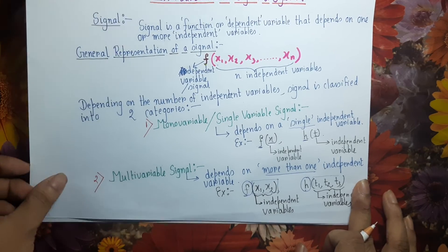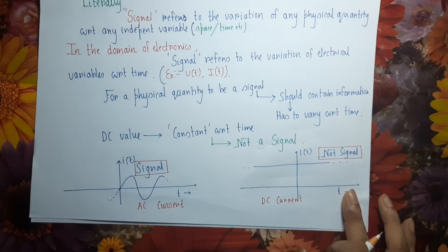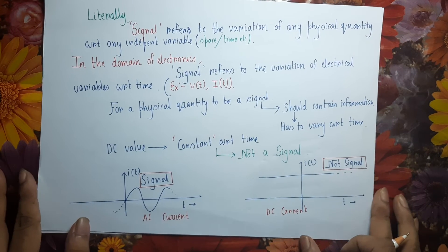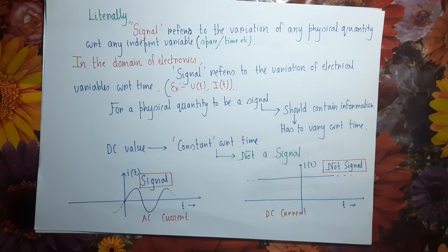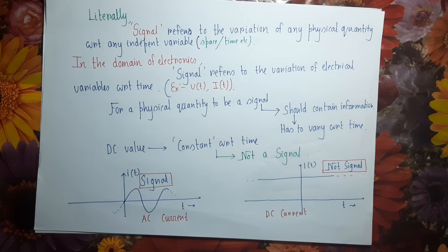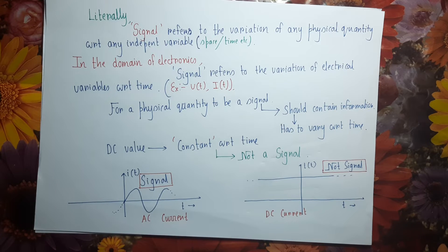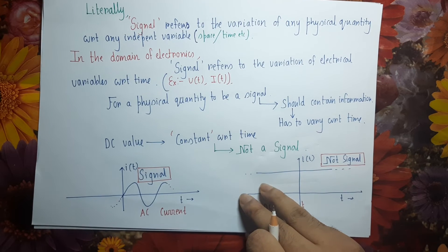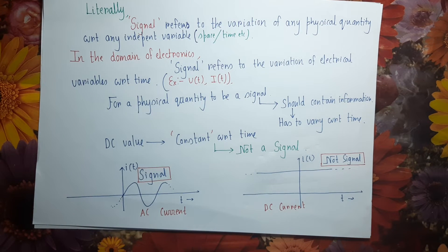Now let us understand what a signal literally means in electronics. A signal is simply the variation of any physical quantity with respect to any independent variable. If a physical quantity varies with respect to any parameter — it may be space, time, or both — that physical quantity is said to depict a signal.